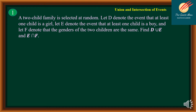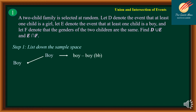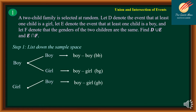Find D union E and E intersection F. So let's list down first the sample space for step number one. If the first child is a boy and the second child is a boy, we have BB. If the first child is a boy and the second child is a girl, we have BG. If the first child is a girl and the second child is a boy, we have GB. If the first child is a girl and the second child is a girl, we have GG.